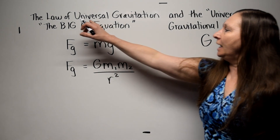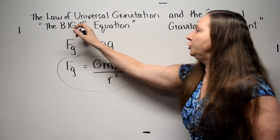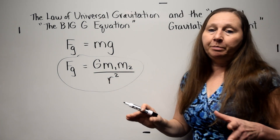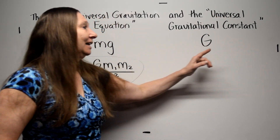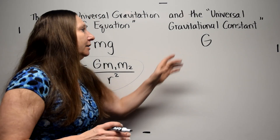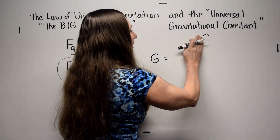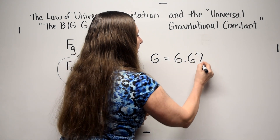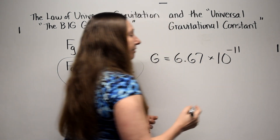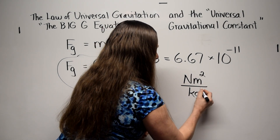Let's start by looking at the law of universal gravitation — otherwise known affectionately as the big G equation. You see the big G there. The name for big G is the universal gravitational constant. Let's look at it quickly on the reference tables. You can find the universal gravitational constant on the reference tables: G equals 6.67 times 10 to the negative 11. Now let's take a look at this unit: Newton meters squared per kilogram squared.